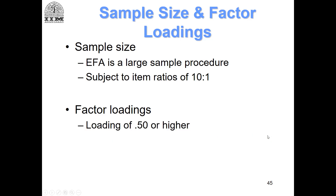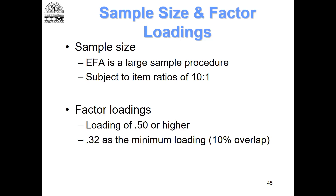Regarding factor loadings, you should usually target a loading of 0.5 and above. Ideally, you should look for a factor loading of 0.7 and above. But acceptable loadings can go as low as 0.5. In some cases, if you feel an item is really important, you can go as low as 0.3 as the loading.